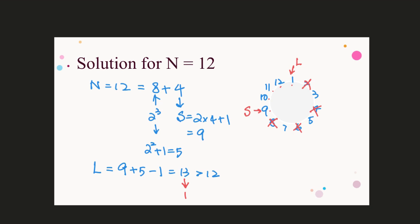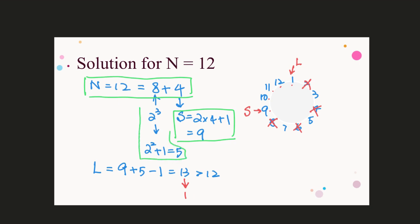Let me summarize the working. First, we rewrite N as two numbers: one is a power of 2, and we use the other number to find the value of S. This S is in fact the first number of the remaining group. We then use the power to locate the position of L. With the position and the first number, we can find out the value of L.